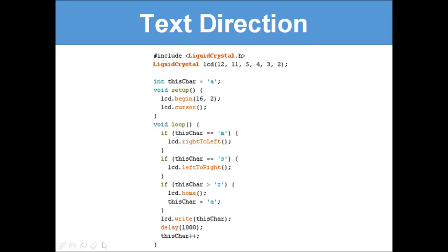Text direction changes the direction in which characters are printed. In the example, it prints a, b, c, d... up to m left-to-right, then when it reaches m it switches direction and prints right-to-left back to s, then switches again. The key code is: `if (thisChar == 'm') lcd.rightToLeft();` and `if (thisChar == 's') lcd.leftToRight();` — these change which direction new characters are printed on screen.